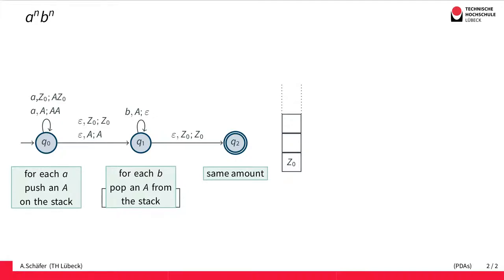At some point, we decide non-deterministically—that's one important part: our PDAs are all non-deterministic in this course. Here we have a non-deterministic choice of which transition to take.